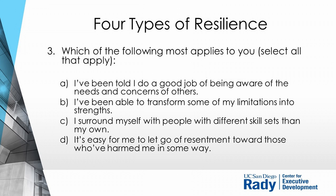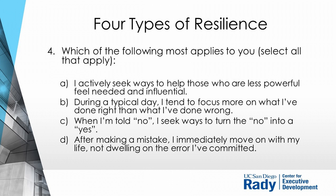Question four — which of these apply? A — I actively seek ways to help those who are less powerful feel needed and influential; B — during a typical day I tend to focus more on what I've done right than what I've done wrong; C — when I'm told no, I seek ways to turn the no into a yes; D — after making a mistake I immediately move on with my life, not dwelling on the error. Write down all that apply, then tally up whether you had mostly A's, B's, C's, or D's — and note if you were absent any category.